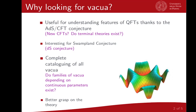Recent discussion arose after the formulation of the de Sitter conjecture on the very existence of de Sitter vacua in string theory. Studying the vacua in supergravity will also provide us with new insights about why it is so difficult to obtain de Sitter vacua in string theory and supergravity, and also on how to obtain those vacua. There are other reasons leading to the study of vacua in five dimensions: they will give us a better grasp on the theory, and we could also learn whether, in five dimensions, there exist families of vacua which depend on continuous parameters, analogously to what happens in four dimensions.